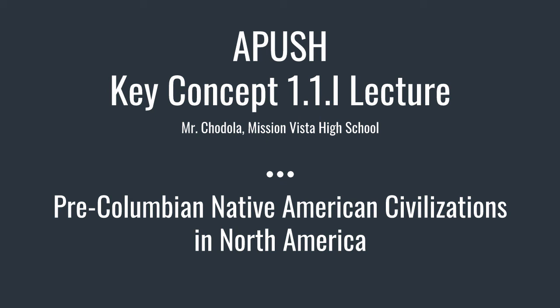Key concept 1.1.1 is pre-Columbian Native American civilizations in North America. We're dealing with all the different types of civilizations that existed in specifically North America before Columbus — that's where the pre-Columbian term comes from. This whole historical period begins in 1491, so you are expected on the test to be aware of what lives and civilizations were like for Native Americans before the introduction of Europeans into the Americas.